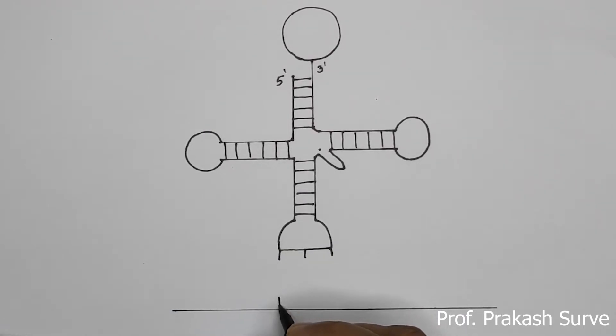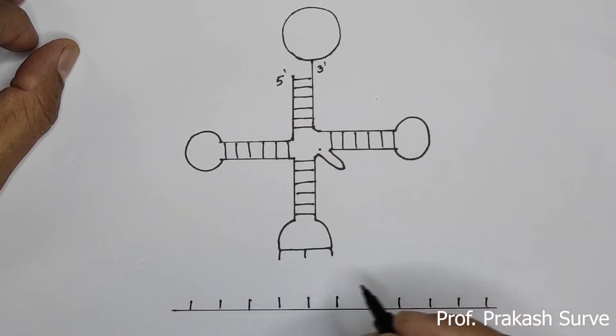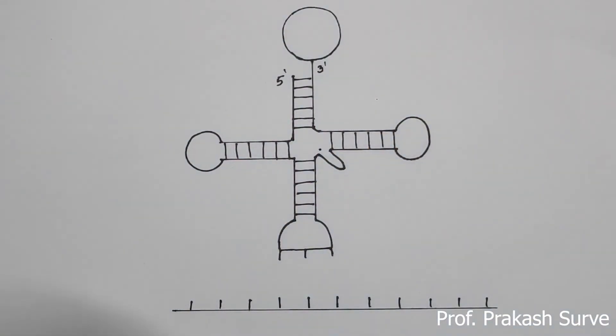Corresponding to this here for the nitrogen base, we will make the lines here. And now with equal distance we will make the lines here. Same way here also. Now here we will make the nitrogen bases for this.